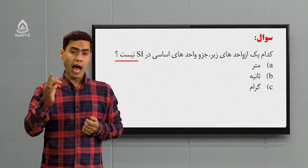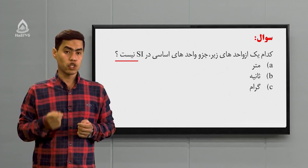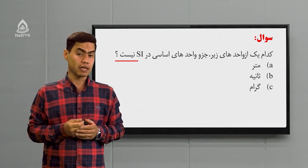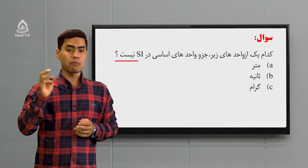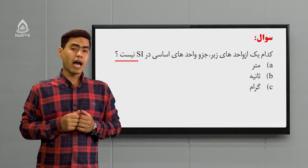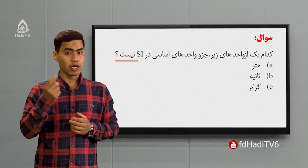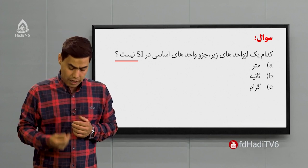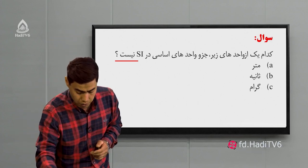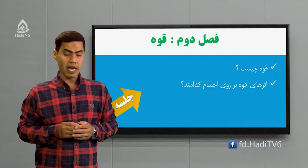گفتیم کمیت‌ها دو دستن: اساسی و فرعی. گفتیم اساسی‌ها هفتاست و سه تایش رو شما در این صنف باید یاد بگیرین. با هم بگیم: طول، واحدش چی بود؟ متر، پس گزینه الف صحیحه. بعد وقت یا زمان بود، واحدش ثانیه، گزینه ب هم صحیحه. کمیت بعدی کتله بود، واحدش کیلوگرام بود. پس گزینه ج که گفته گرام، این نمی‌تونه پاسخ صحیح باشه. پس گزینه ج جواب این سوال ما خواهد بود.